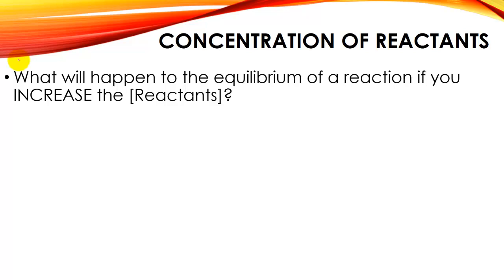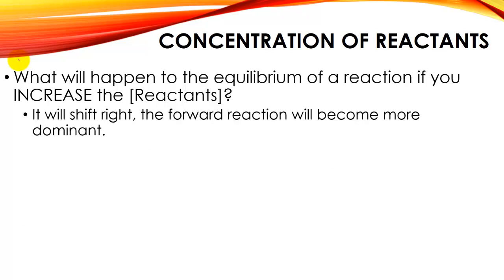Going back to equilibrium — Le Chatelier taught us that if we mess with the concentration of reactants or products, we'll create a shift. If we increase the amount of reactants, we're going to create a right shift — making the forward reaction more dominant and producing more products.